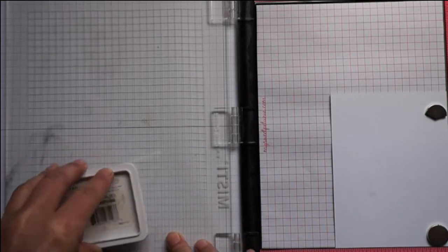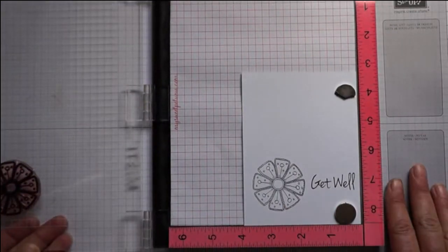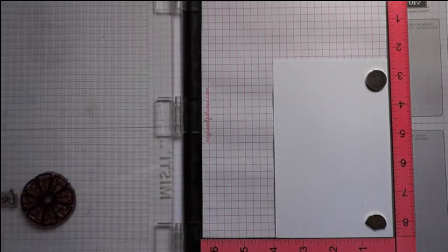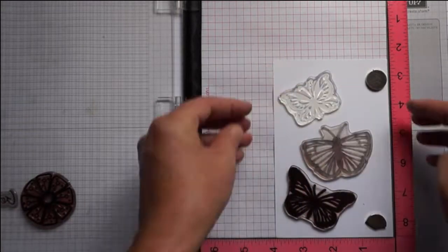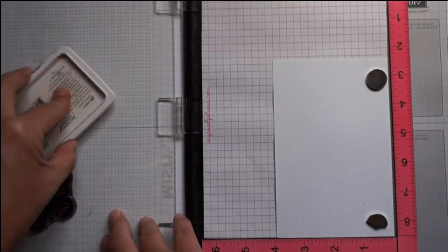And here I just wanted to show you, if you wanted to do a whole card front at once, you've got your image, you've got your sentiment, you put it where you want on your card, ink it up and stamp, and you're done. All that's needed is to color in and assemble your card.